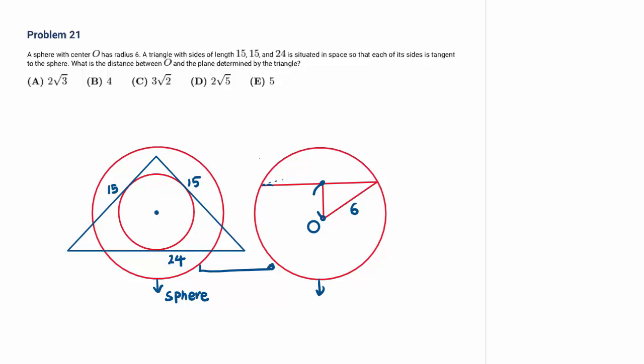To find D, we first need to find the radius R of the cross-sectional circle — that is, the inscribed circle radius of the triangle. The triangle is isosceles with sides 15, 15, and 24.